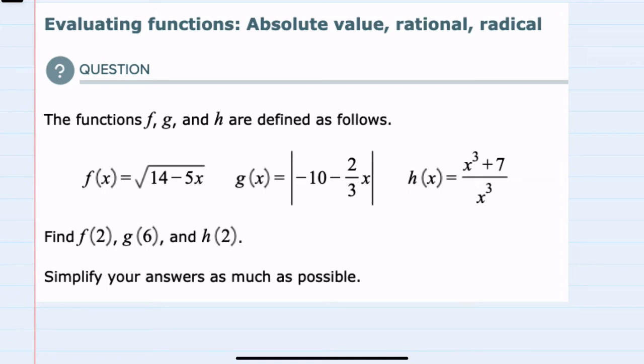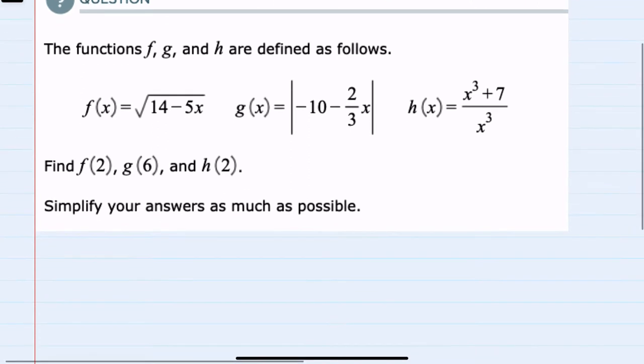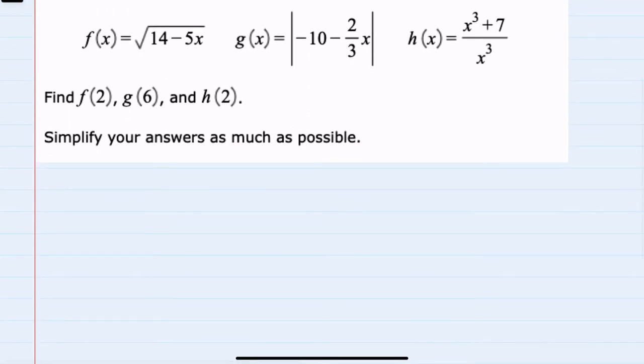In this video I'll be helping you with the ALEKS problem type called Evaluating Functions: Absolute Value, Rational, Radical, where we're given three functions f of x, g of x, and h of x, and we're asked to find f of 2, g of 6, and h of 2. To do so, I'll first rewrite each of these functions.